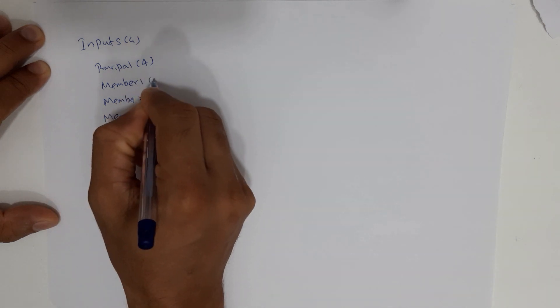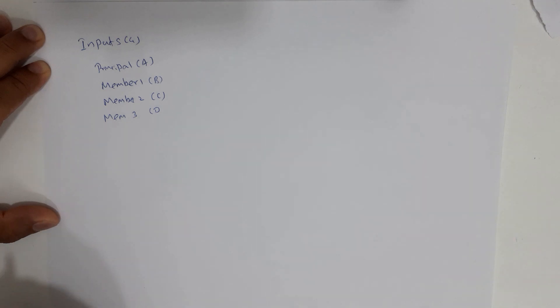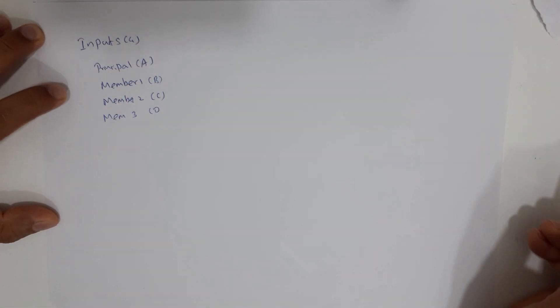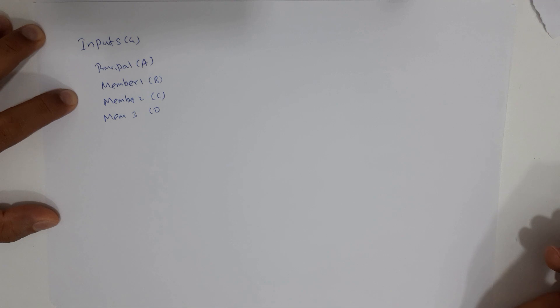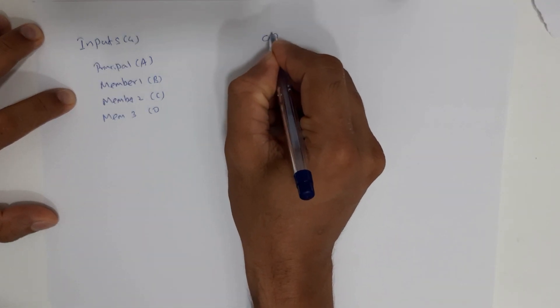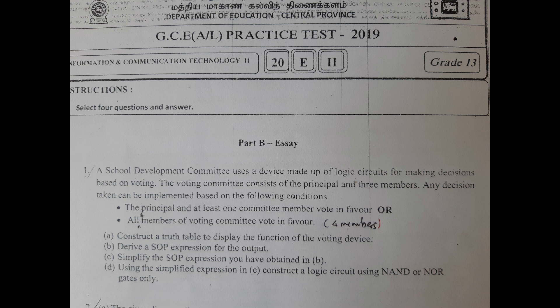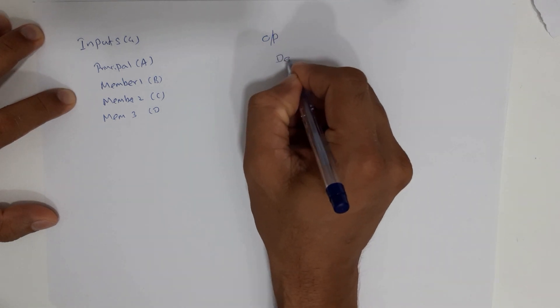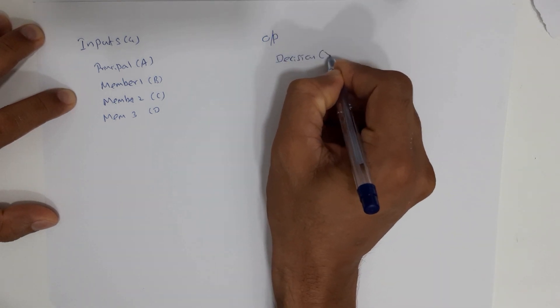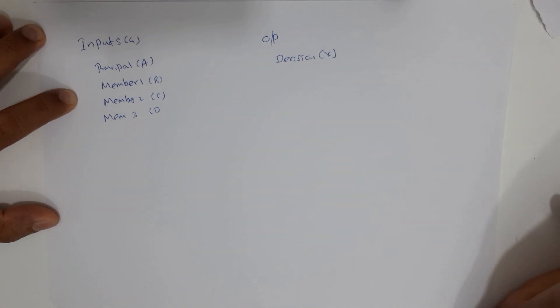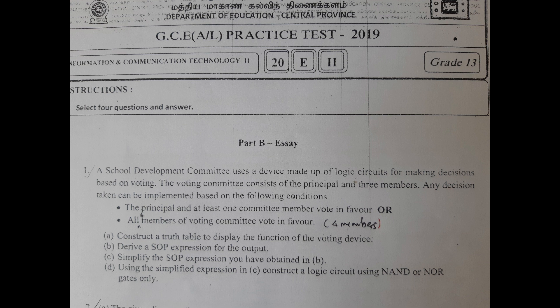We'll assign letters B, C, and D to the three members. So we can understand that there are four inputs for this question. The output here is the decision, which we'll label as X — the usual letter. Now we have to assign 1s and 0s. Since they are not given in the question, we'll go with the positive side as 1 and the negative side as 0.